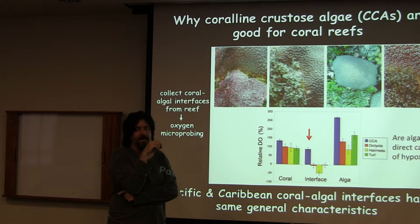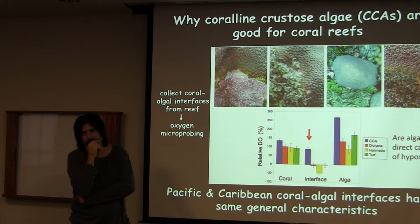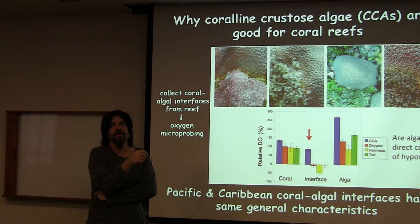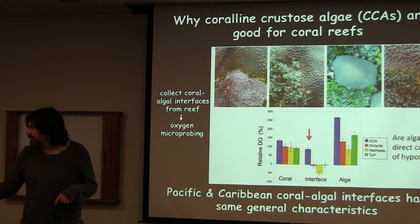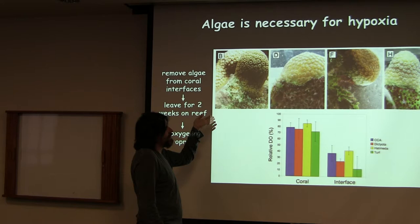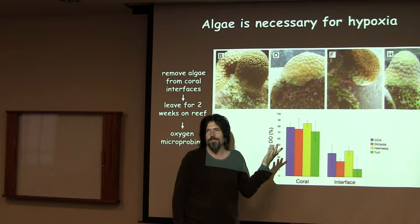This is just heterotrophs eating whatever is available to them. And to show that the algae is necessary for the hypoxia — all she did was go out and scrape off the algae, then came back two weeks later. The hypoxia zones go away when you do that. So you at least need the algae for that part of it.